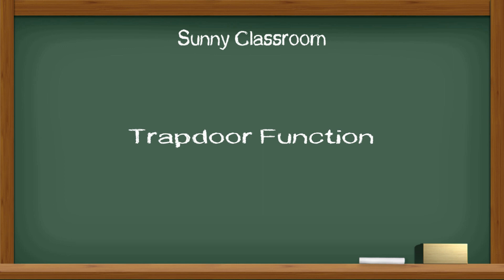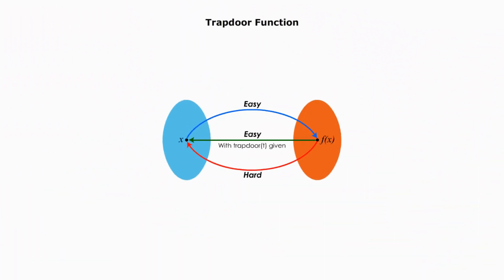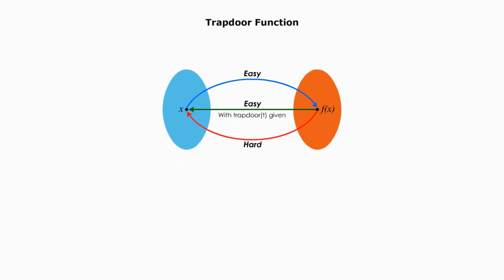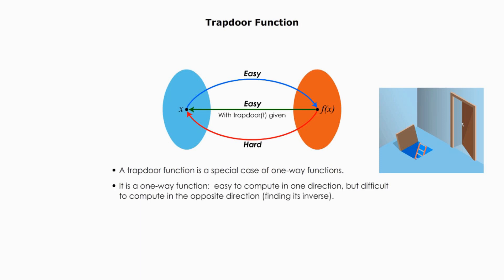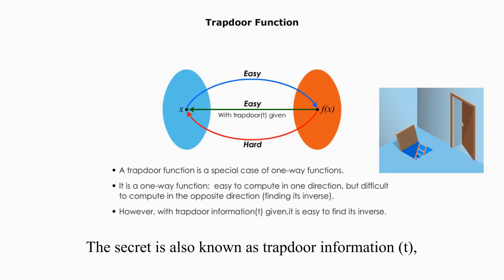Trapdoor function. A trapdoor function is a special case or a subset of one-way functions. A trapdoor function is a one-way function. It is easy to compute in one direction, but is difficult to find its inverse. Except that with a secret given, it is easy to find its inverse. The secret is also known as trapdoor information, t. We use the letter t to represent the secret.